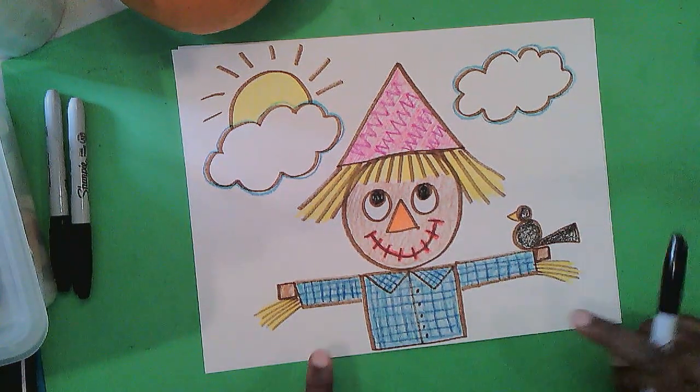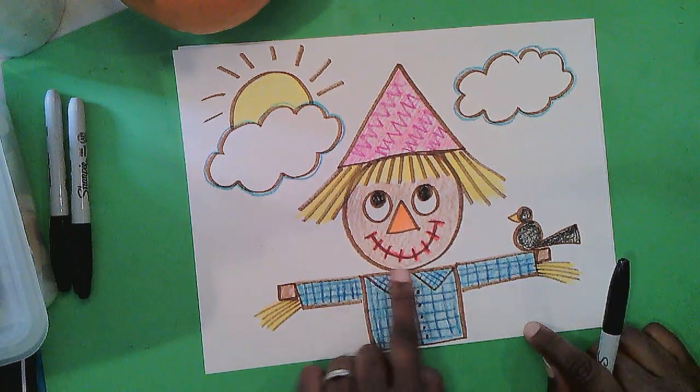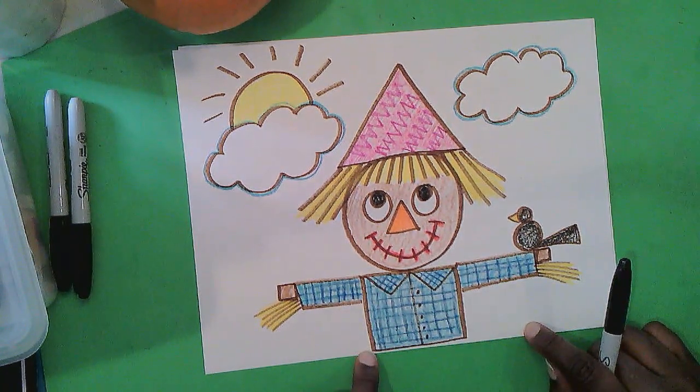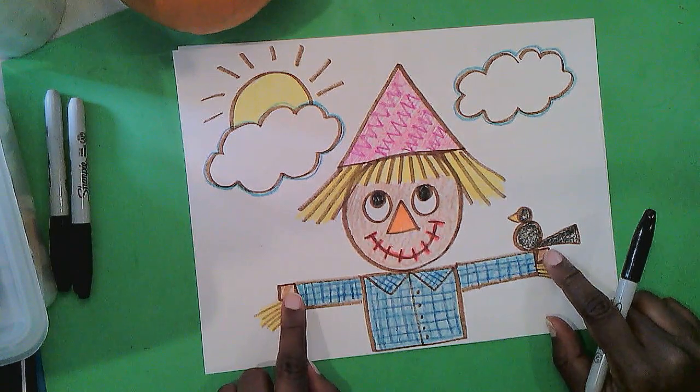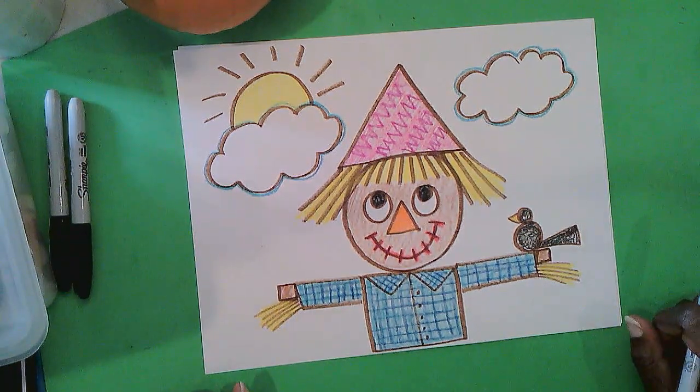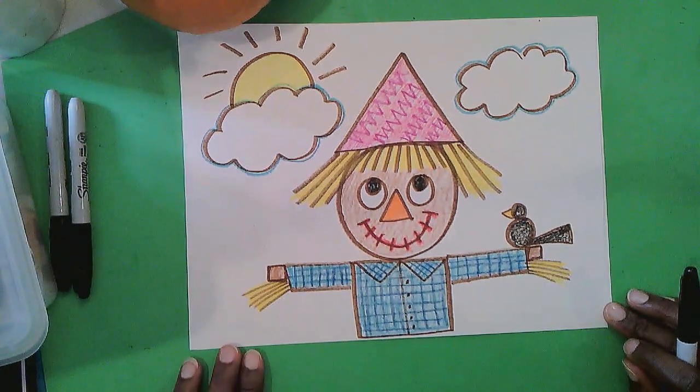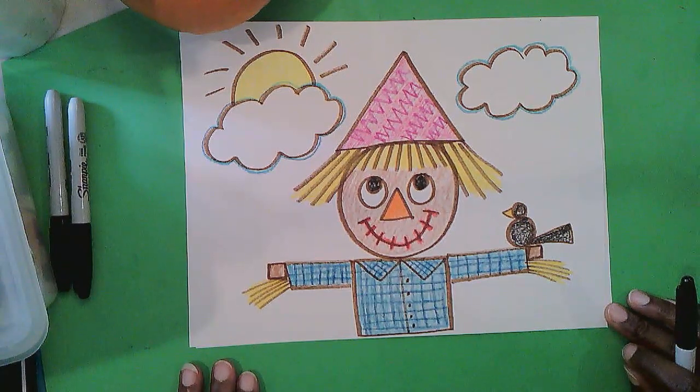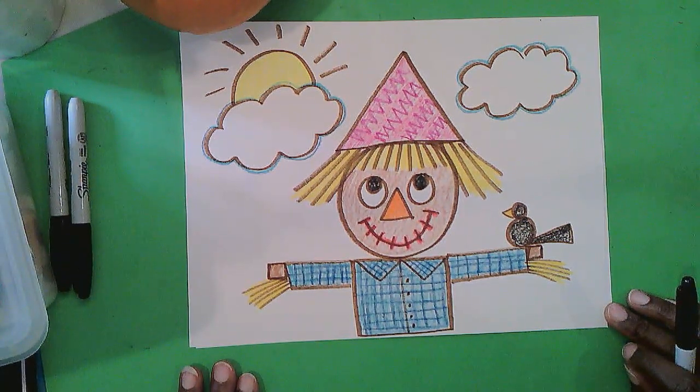Two rectangles here. A big square in the middle of the shirt. And two little squares on the end. Well, I had fun with you today. And we've reviewed shapes. We used shapes to draw a picture.